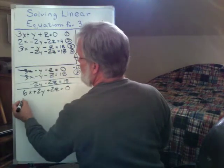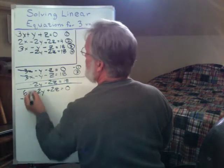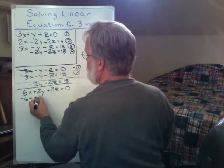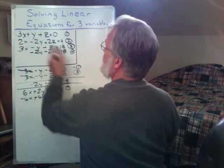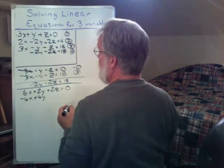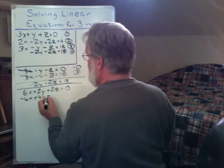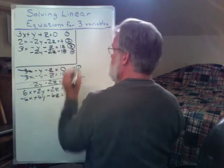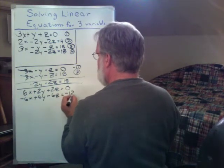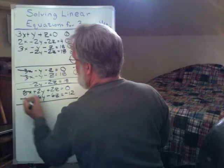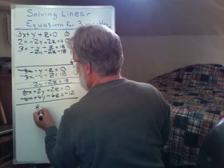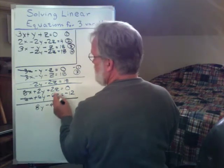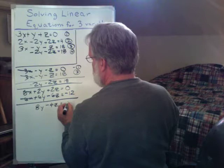And then a negative 3 is a negative 6x. A negative 3 times a negative 2y is a positive 6y. And a negative 3 times a positive 4 is a minus 12. I've got those two together. I get rid of that. I now have 8y minus 4z equals minus 12.